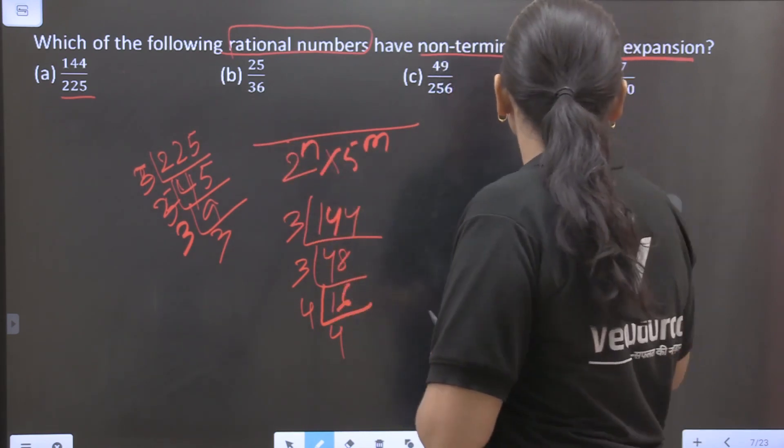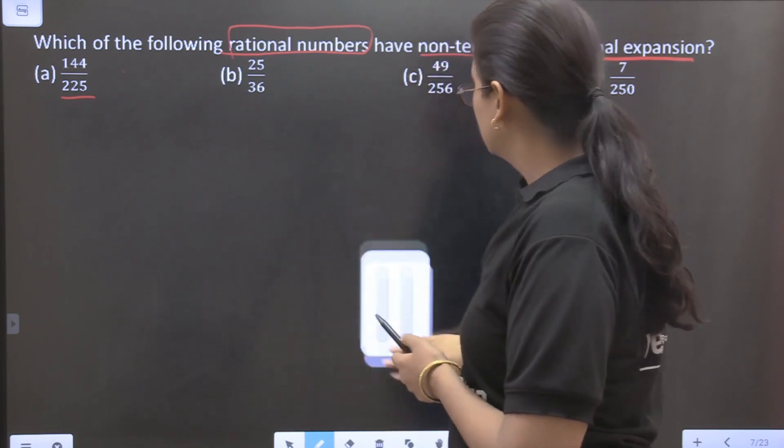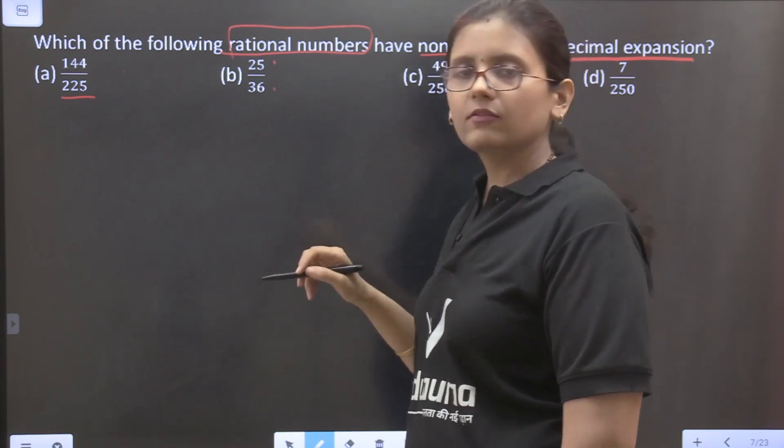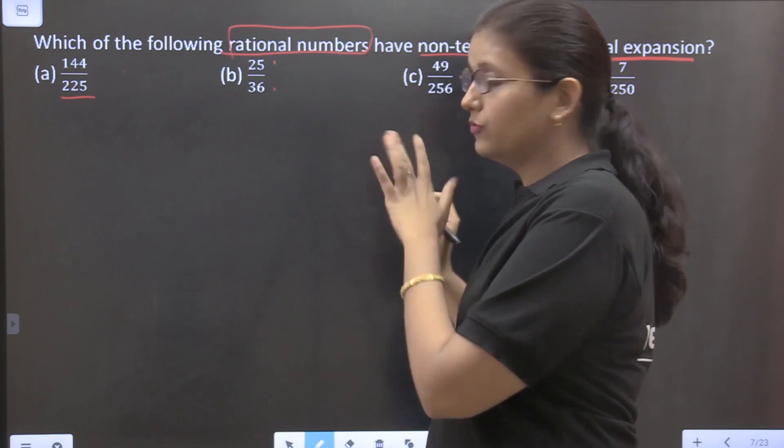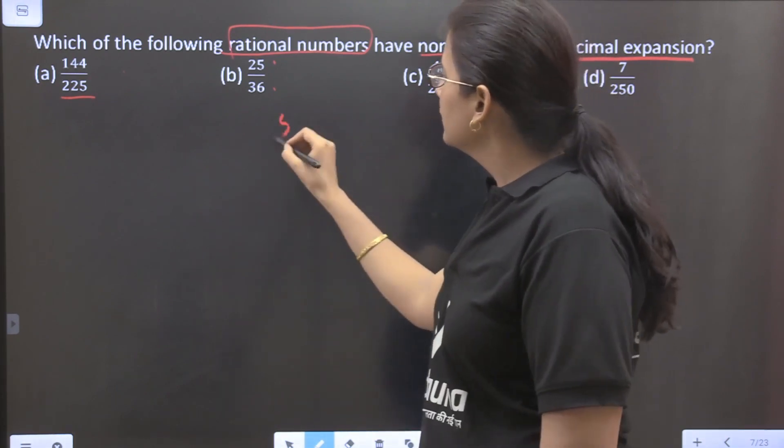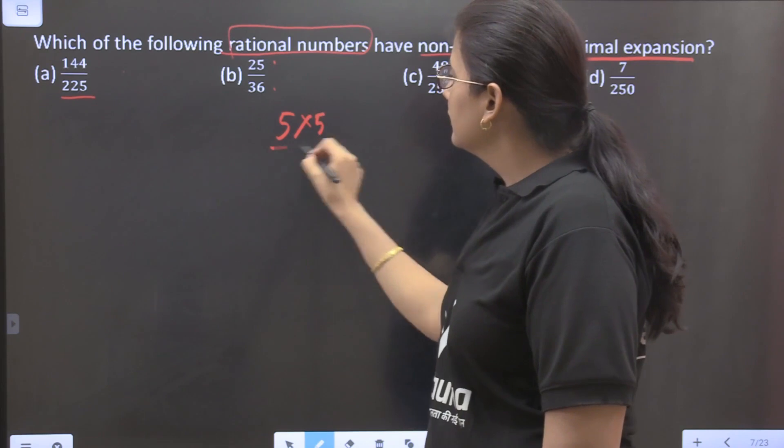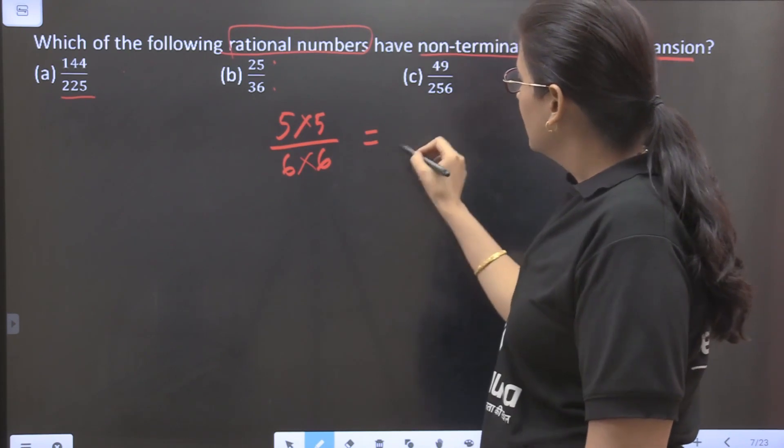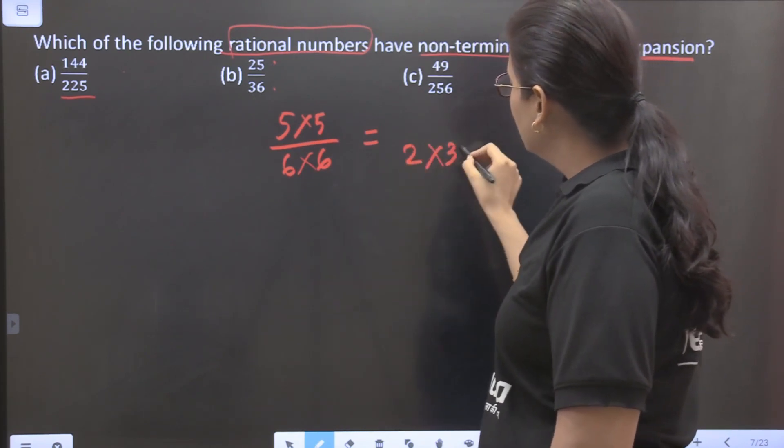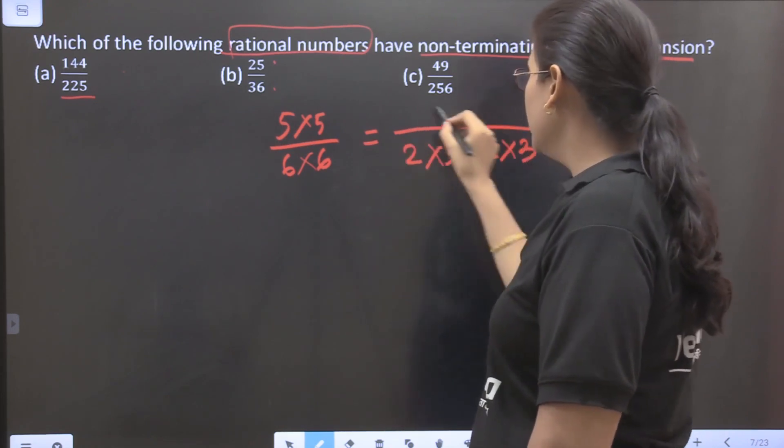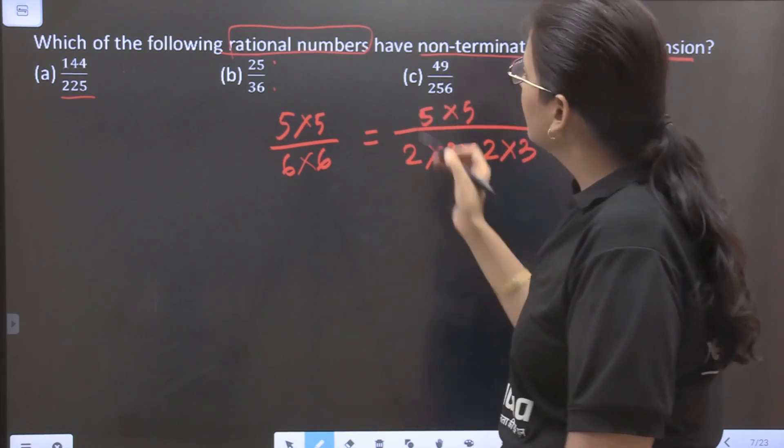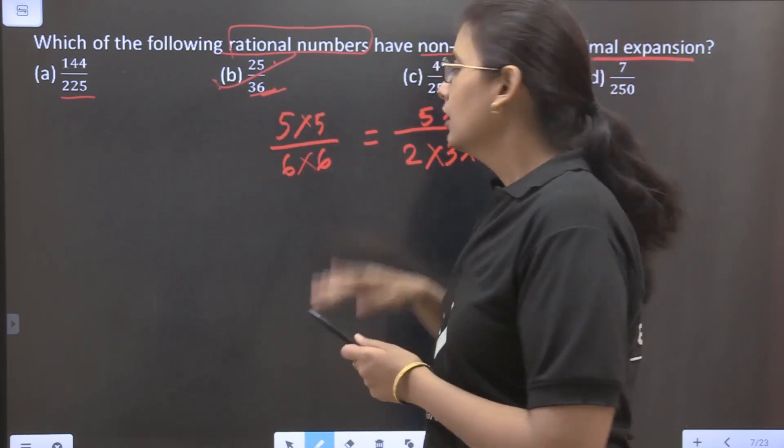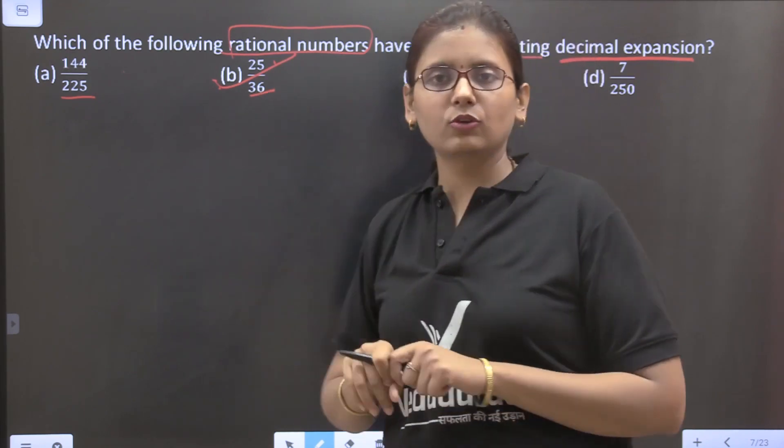Now coming to this part 25 and 36, these do not have any common factors, these are in the lowest form. Now it is 5 into 5, this is 6 into 6. So here it will be 2 into 3 into 2 into 3. So in the denominator we have 3, that means our decimal expansion here will be non-terminating.